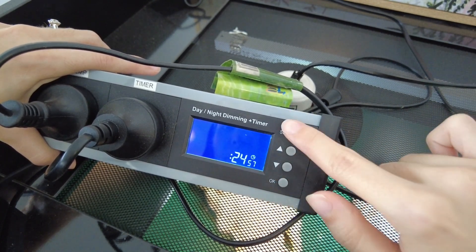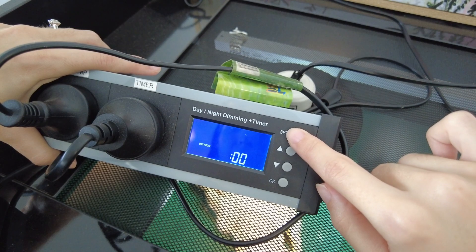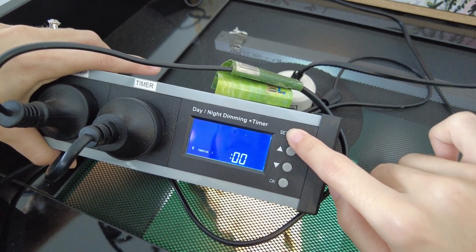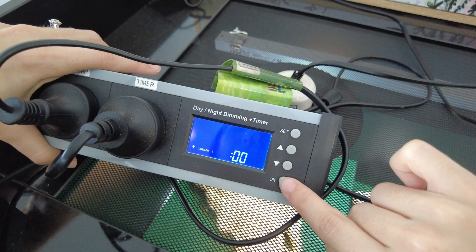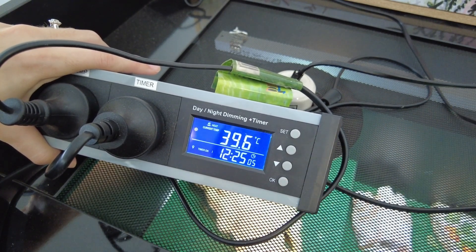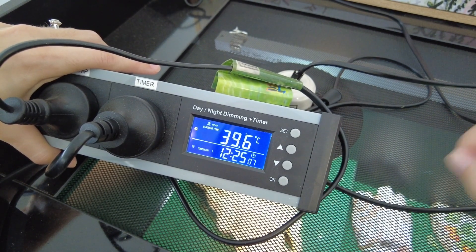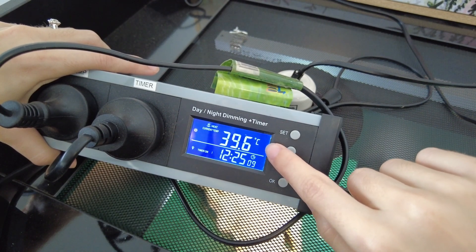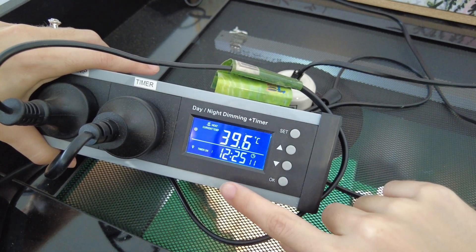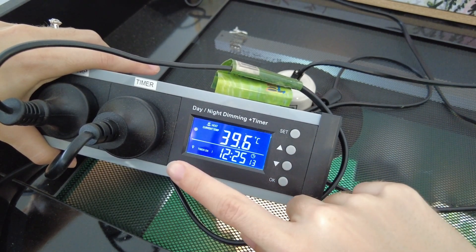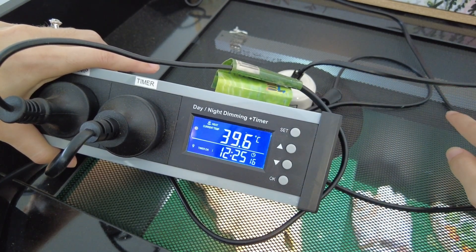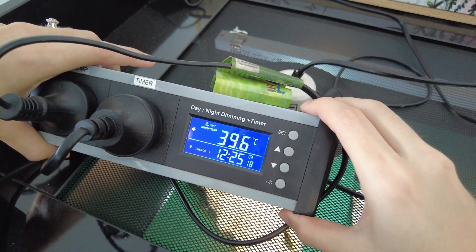All right, and again it's just going to keep going around in circles so you can edit anything if you've made a mistake. But once you're happy with all of that, you're just going to press OK again and it's going to take you to your home screen where it will tell you what your current temperature is, where that little probe is measuring, and what the time is too, and letting you know that the timer is on. So your UVB light is on at the moment and it's as simple as that.